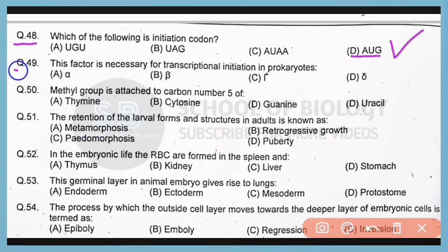Question number 49. This factor is necessary for the transcriptional initiation in prokaryotes. So correct answer is option D. Sigma factor is responsible for initiation of transcription in case of prokaryotes.